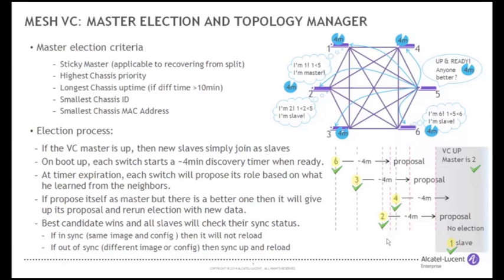When a VC comes up for the first time, upon reaching chassis ready status, each unit starts a 4-minute master discovery election window. During this window, each physical chassis learns of its neighbour's chassis priority contained in the TLVs. A master is elected based on a set of defined criteria. A sticky master is the current master chassis, if still present, and it will continue to act as such in all subsequent elections versus a slave chassis until it is rebooted. Other criteria that are used are the highest chassis priority, longer chassis uptime, smaller chassis ID, and lower chassis MAC address. In the case a slave chassis becomes unreachable or a new slave joins, a new election is not triggered for the already connected members of the VC.